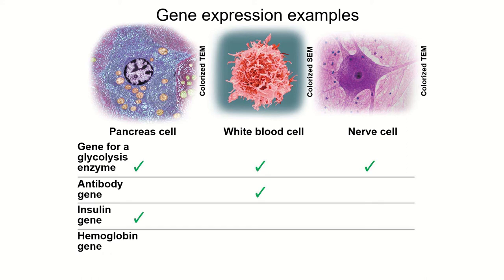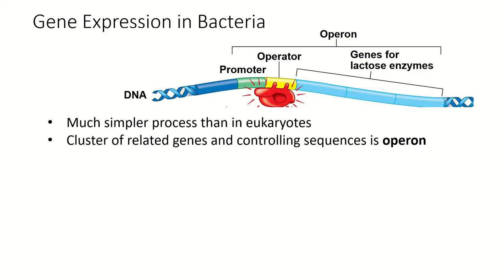To understand this, let's talk first not about a multicellular organism but about a bacterium. Bacteria are much simpler than eukaryotic organisms. They're single-celled and they just have one chromosome that's a loop of DNA, with many fewer genes, so the process of gene expression is going to be much simpler.